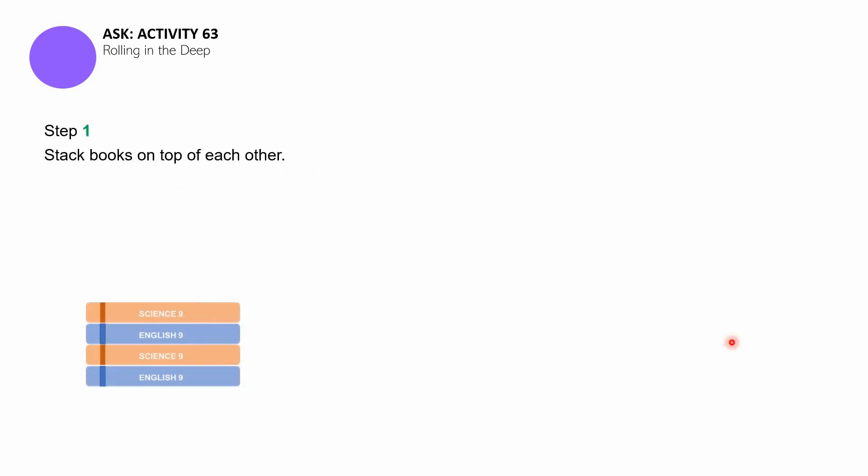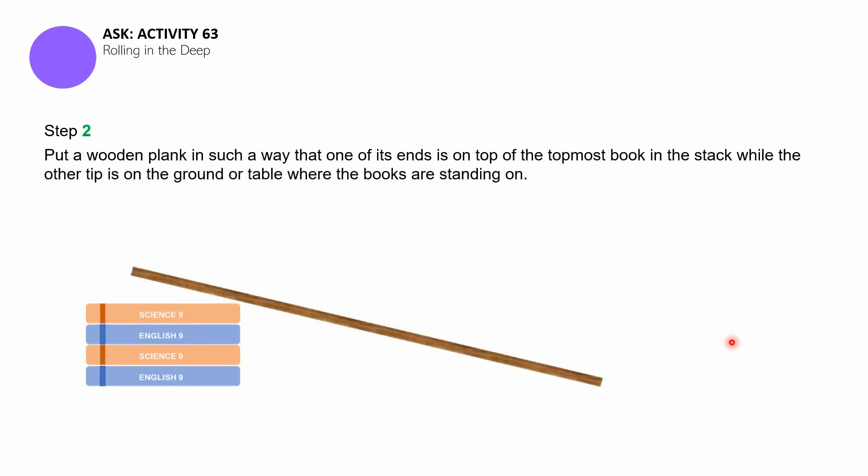For the first step, you have to stack books on top of each other. They can have a particular kind of height that actually depends on your preference. Also, the next step, you have to put a wooden plank in such a way that one of its ends is on top of the topmost book in the stack while the other tip is on the ground or table where the books are standing on. So the wooden board, position it at an angle like this.